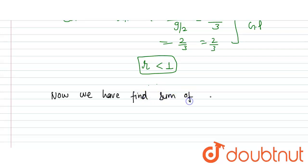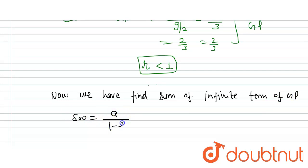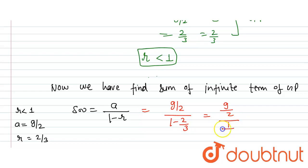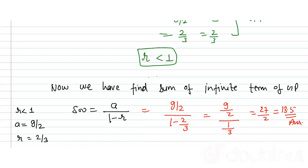Now we have to find the sum of infinite terms of the GP. The formula is S∞ equals a divided by (1 minus r), where r is less than 1. Here a equals 9/2 and r equals 2/3. So S∞ equals (9/2) divided by (1 minus 2/3) equals (9/2) divided by (1/3) equals 27/2, which equals 13.5. So this is our answer.